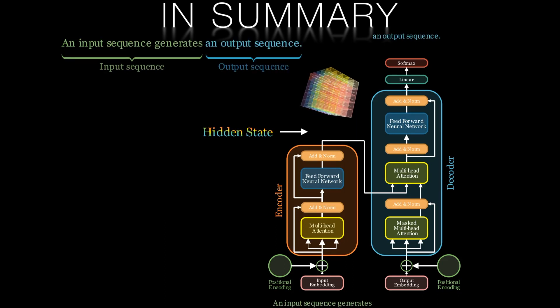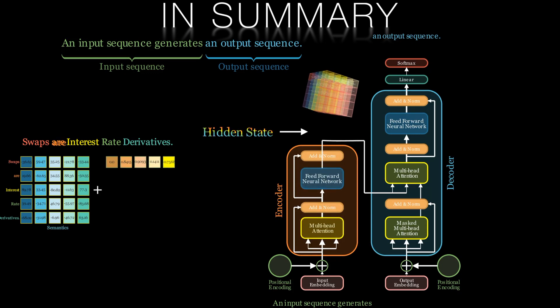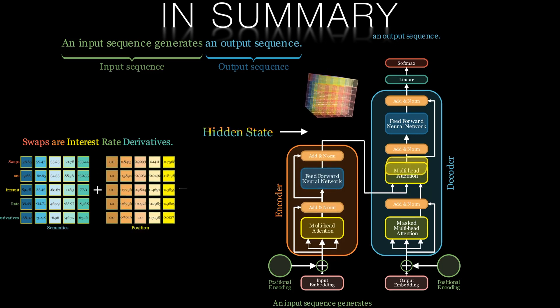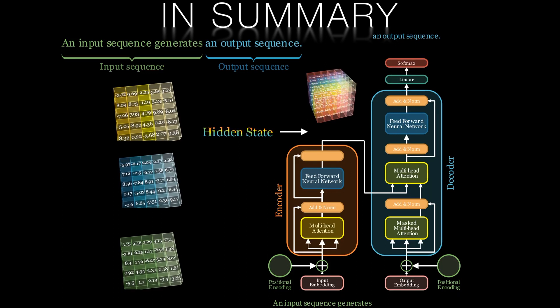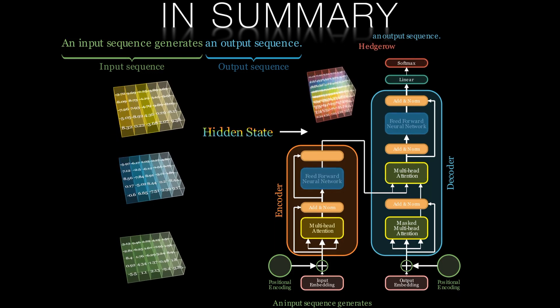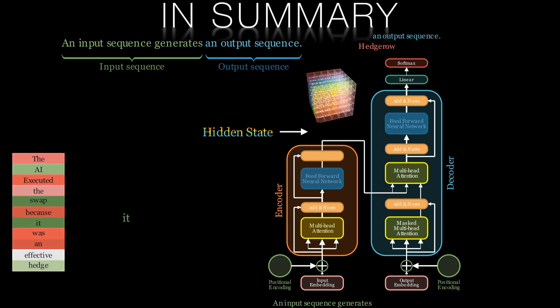We saw how the transformer converts words into a numeric representation, utilizing positional embeddings, and we checked out the attention mechanism that dynamically weights the relationships and relevance of elements in the sequence.